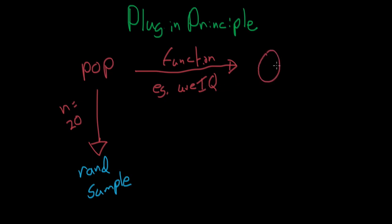We're going to call this function of the population theta for the rest of this class — it's just a Greek letter. Theta is a single number, like average IQ — one number representing this population. For the moment we're going to be dealing with simple one-number cases. What's the problem? Well, we need to talk to every single person in the United States, give them an IQ test, have them complete it, record it, and average it.